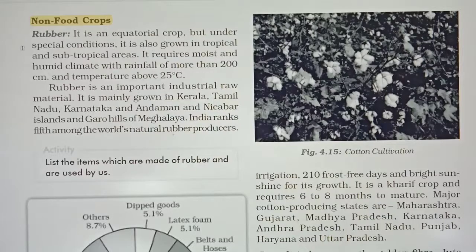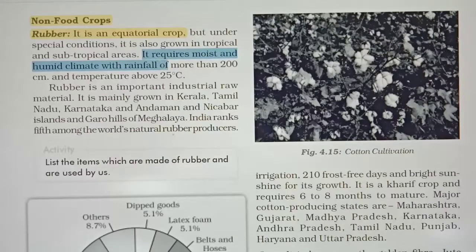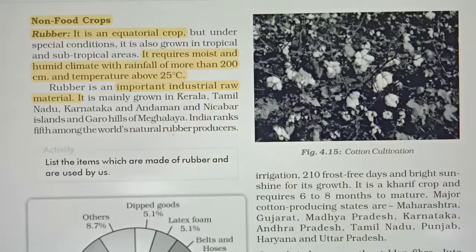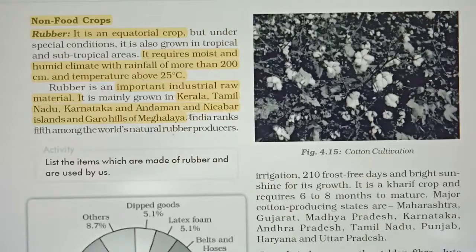Non-food crop number one is rubber. Rubber is an equatorial crop. It requires moist and humid climate with rainfall more than 200 cm and temperature above 25 degrees Celsius. It is an important industrial raw material, mainly grown in Kerala, Tamil Nadu, Andaman and Nicobar Islands, and the Garo Hills of Meghalaya. India ranks 5th among the world's natural rubber producers.